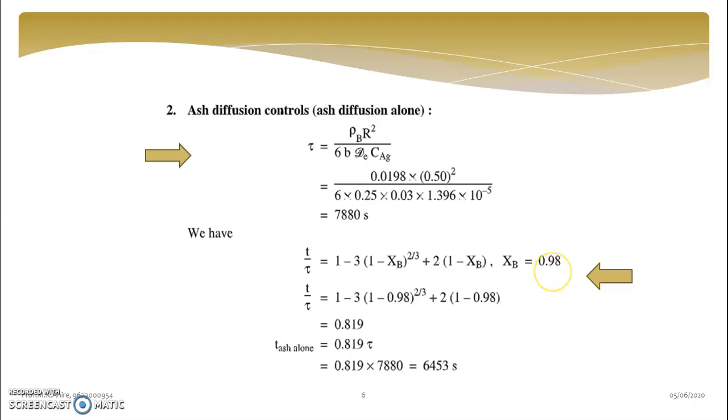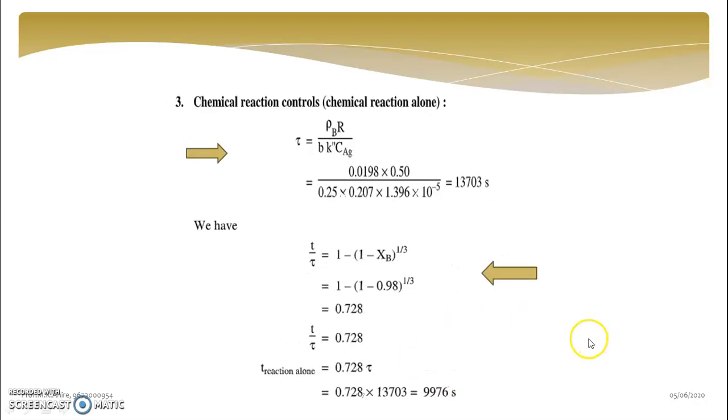Now T tau XB relation for ash layer diffusion is this: T upon tau is equal to 1 minus 3 into 1 minus XB raise to 2 by 3 plus 2 into 1 minus XB. And XB value is 0.98. You have just calculated tau 7880. So T value is 6453.